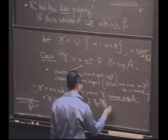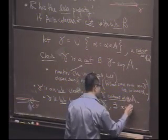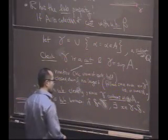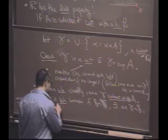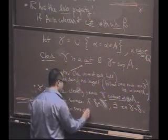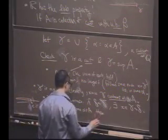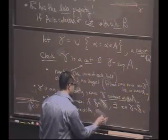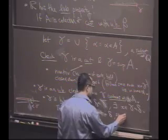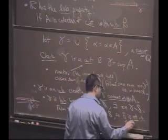So I'll write that down briefly here. If delta is less than gamma, then there exists an x that's in gamma minus delta. This is the set minus. Then x is in some alpha in A, and it's not in delta. So delta is not an upper bound for A.